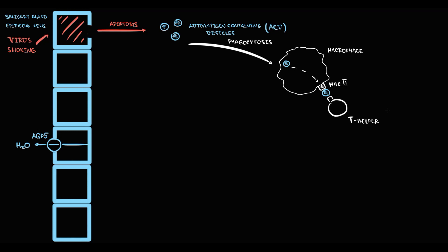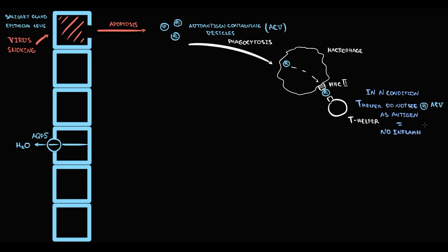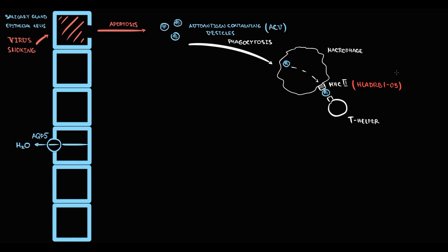The logic is that the antigen-presenting cell wants to know whether apoptotic debris is normal material or something pathogenic. T helpers scan vesicles, and in normal conditions T helpers recognize such vesicles as normal substance, and thereby they do not trigger inflammation. But some people have MHC2 receptors produced based on HLA-DRB1-03 alleles, and in this case inflammation will most probably develop.